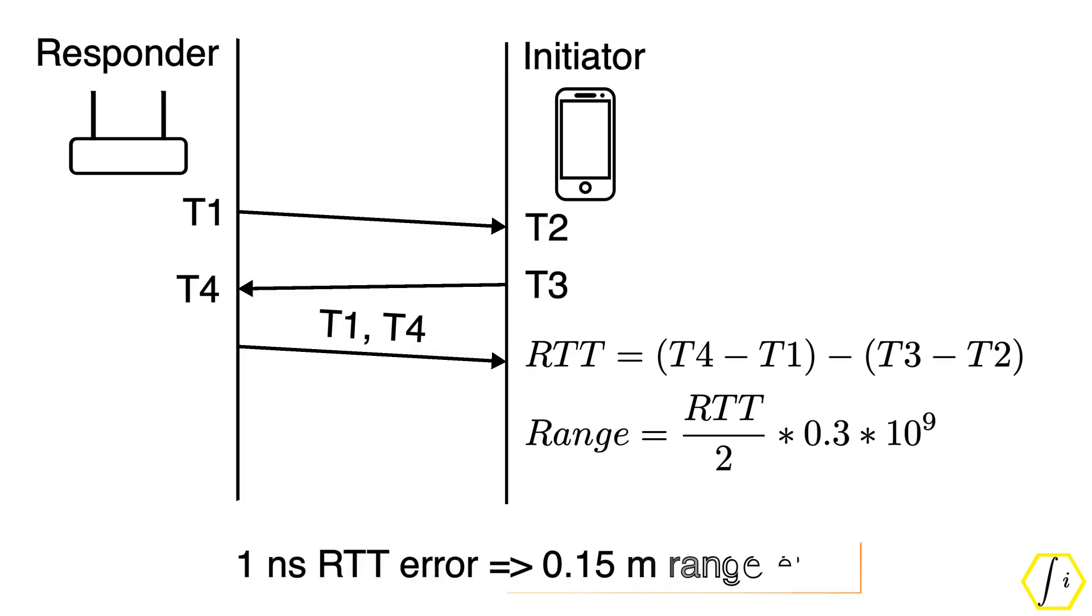It then follows that a 1 nanosecond error in RTT estimate results in a 0.15 meter range error. Therefore, it is crucial to measure the timestamps with high accuracy and every nanosecond counts.